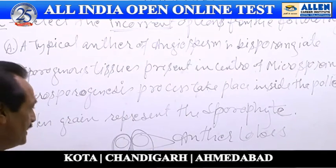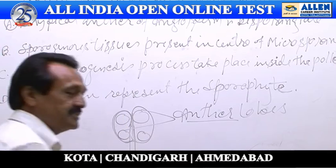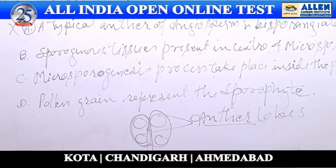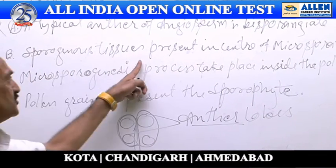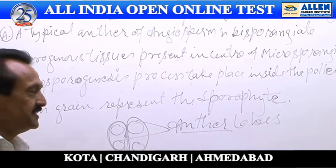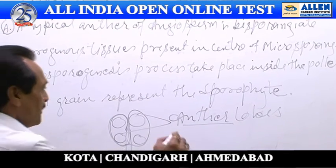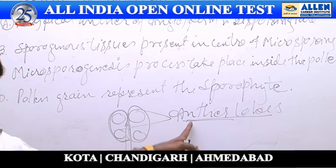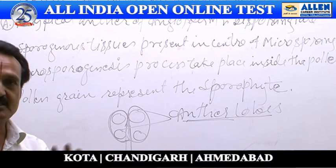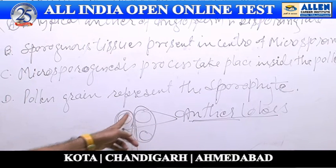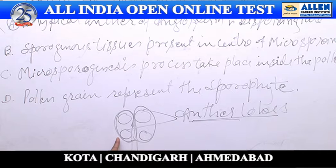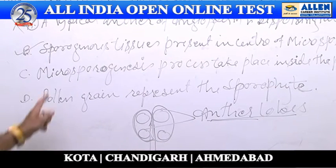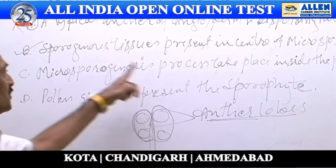It means the first statement is wrong — in place of bisporangia, the typical anther is tetrasporangia. Next, statement B: sporogenous tissues are present inside the microsporangia. The pollen sacs of the anther are also known as microsporangia, meaning formation of microspores takes place inside the pollen sacs. This statement is correct.